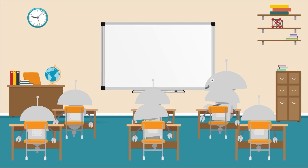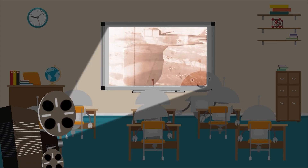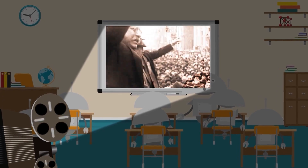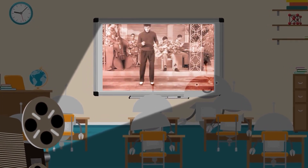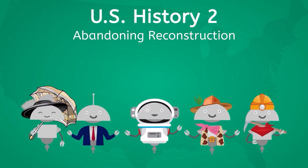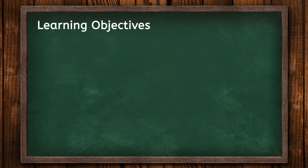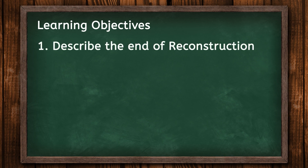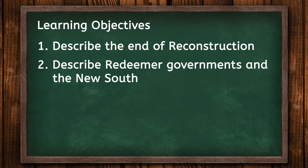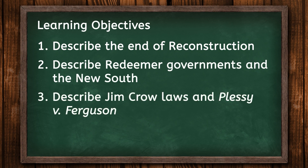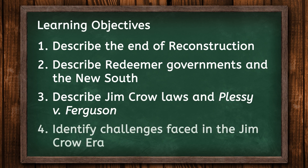What would this mean for Black citizens? Today, we'll wrap up our Reconstruction unit by focusing on these learning objectives: describe the factors that led to the end of the Reconstruction era; describe Redeemer governments and the New South; describe Jim Crow laws and explain the importance of Plessy v. Ferguson; and identify the challenges faced by Black Americans in the Jim Crow era.